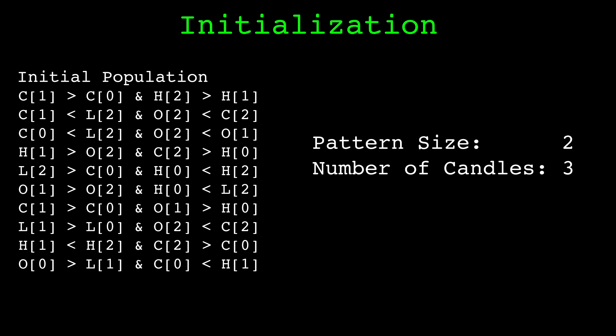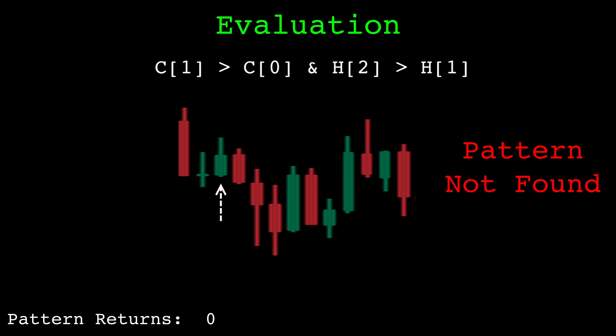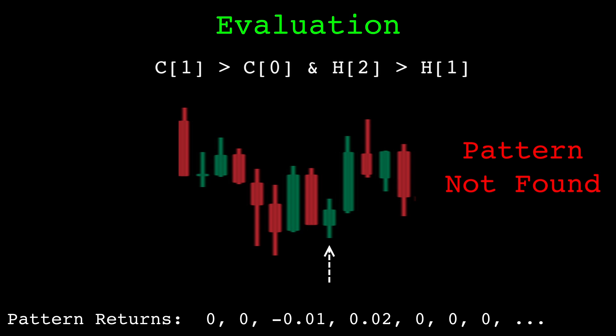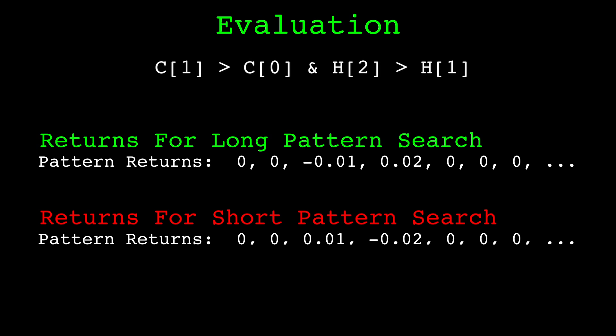We evaluate the performance of a given candlestick pattern with a fitness function. To compute any fitness function, we first loop through each candle in the dataset and check if the pattern is present. If the pattern is present, we record the next log return — the change from the current close to the next close. If the pattern is not present, we record a zero. This gives us a return series concurrent with the candle series in the dataset. If we are searching for patterns for trading short, we flip the signs of the returns. We use this return series to compute fitness functions.